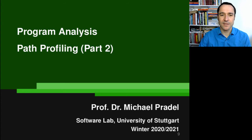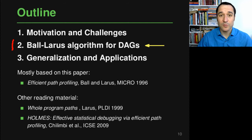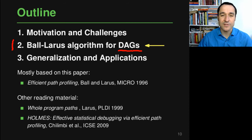Hi and welcome back to Program Analysis. This is video number two in the lecture on path profiling. What we'll do in this second video is to look at the Ball-Larus algorithm, which addresses the path profiling problem introduced in the first video. We look at this algorithm for DAGs — directed acyclic graphs — not arbitrary control flow graphs yet. That's left for the third video, but we start with this simpler case because it's easier to explain the algorithm this way.